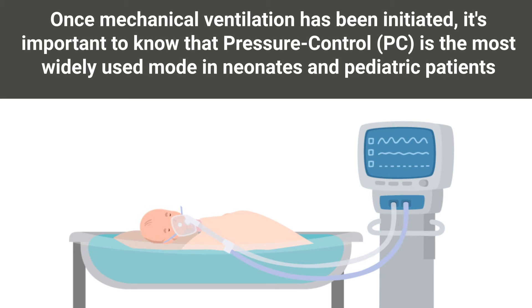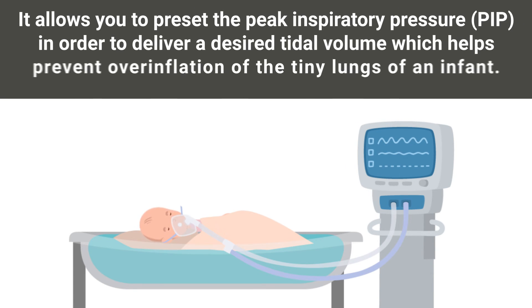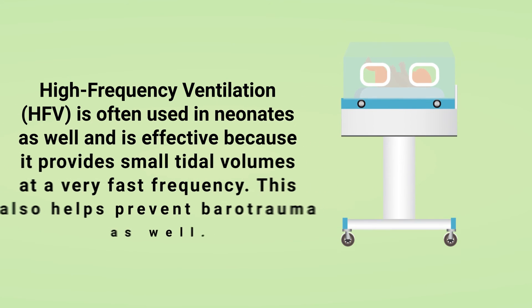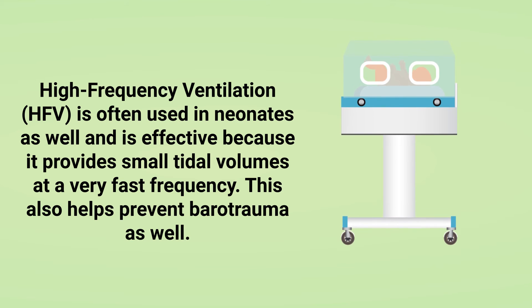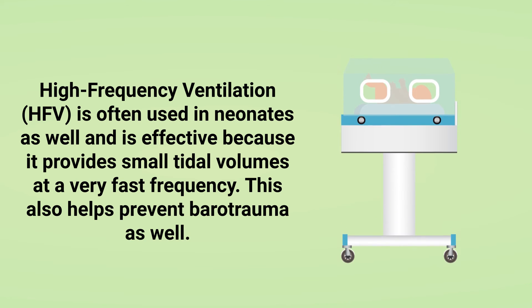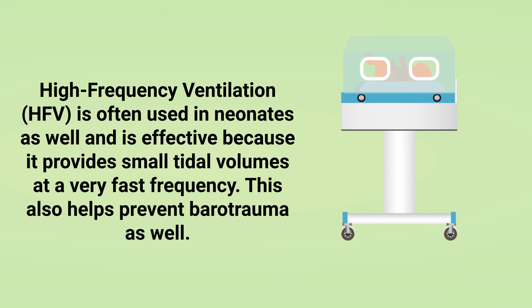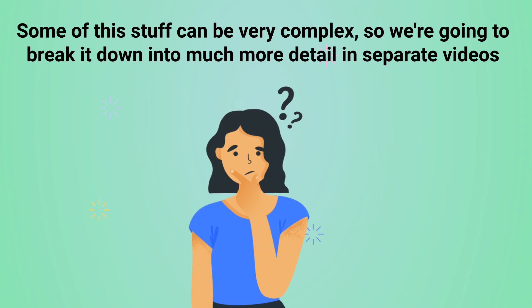Once mechanical ventilation has been initiated, pressure control is the most widely used mode in neonates and pediatric patients. This mode allows you to preset the peak inspiratory pressure, or PIP, in order to deliver a desired tidal volume, which helps prevent overinflation of the tiny lungs. High frequency ventilation is often used in neonates as well, and is effective because it provides very small tidal volumes at a very fast frequency, which also helps prevent barotrauma.